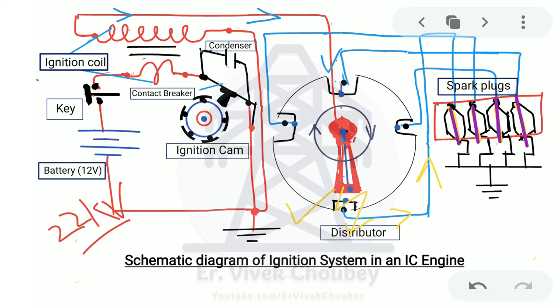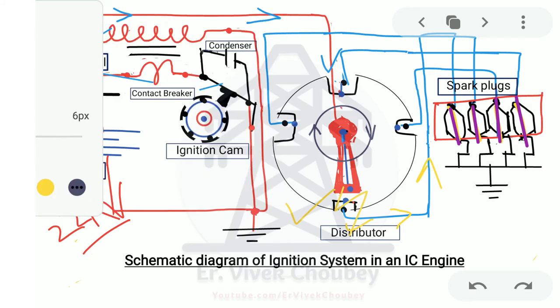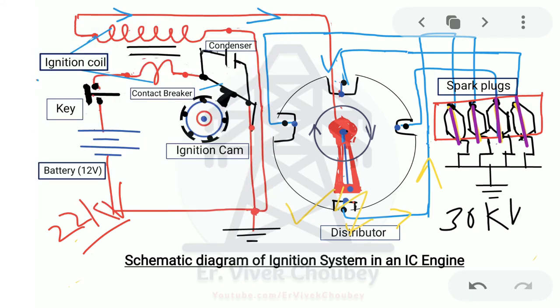The spark plug gap is very important and should remain uniform. The dielectric breakdown of air is 30 kilovolts per centimeter, so you can calculate how much gap is required for 22 kilovolts to jump across. If there is an alteration of this gap, there will be no spark generated, and the IC engine will not work. At the same time, if the gap is too small, the spark generated will be very severe.